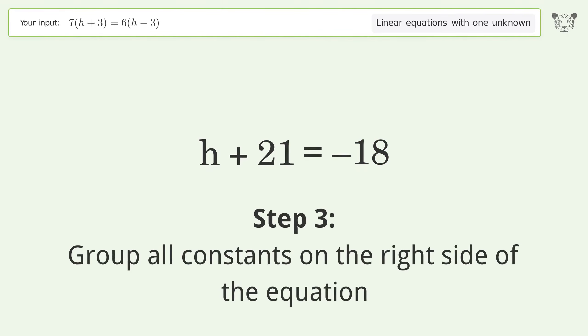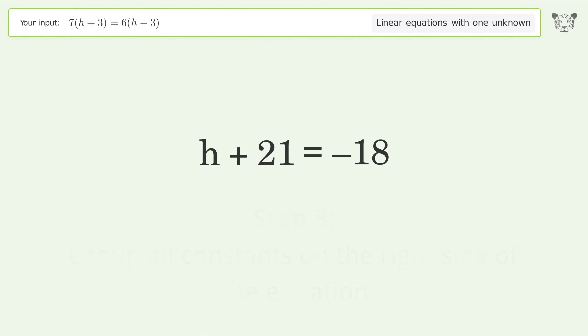Group all constants on the right side of the equation. Subtract 21 from both sides. Simplify the arithmetic. And so the final result is h equals negative 39.